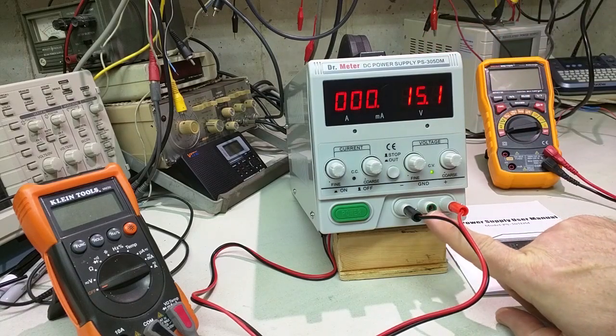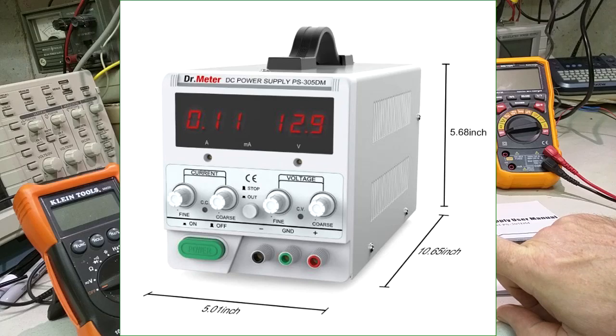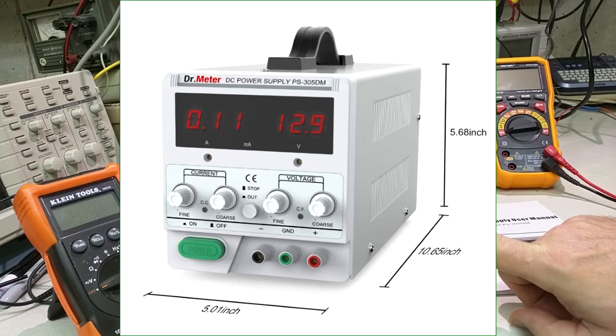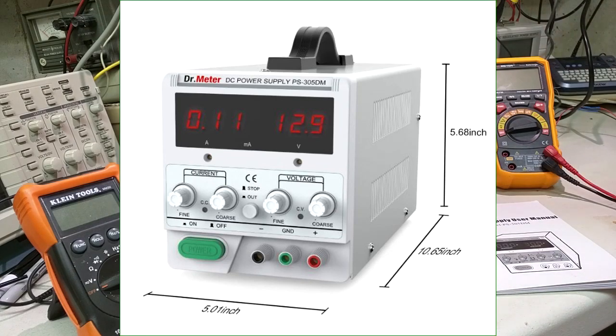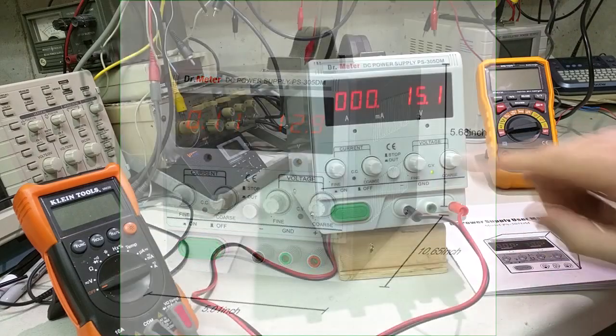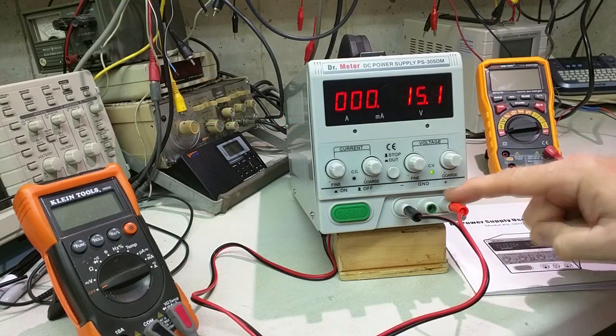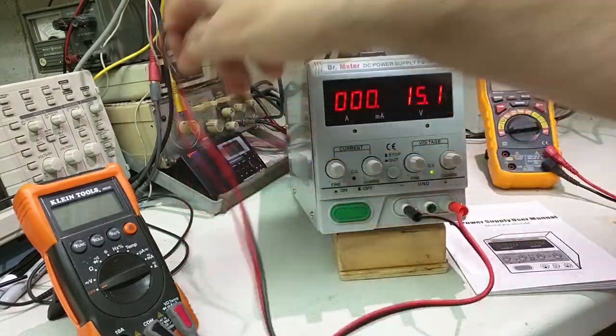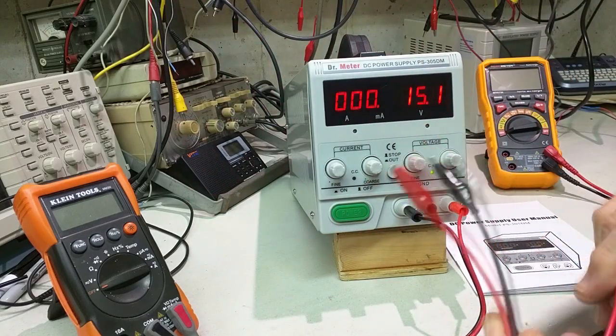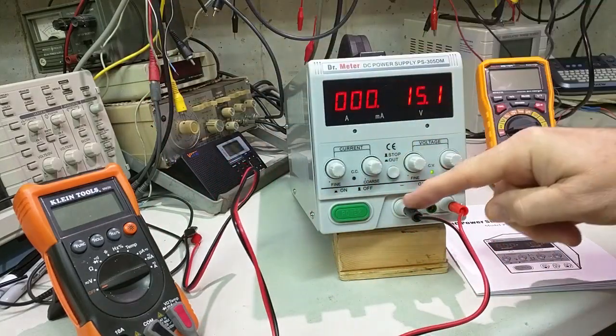Now it has a ground tab right here, and that is the ground that is connected to earth ground on your 120 volt outlets. You have the minus and the plus. It comes with these basic alligator clips with the banana plugs on there.